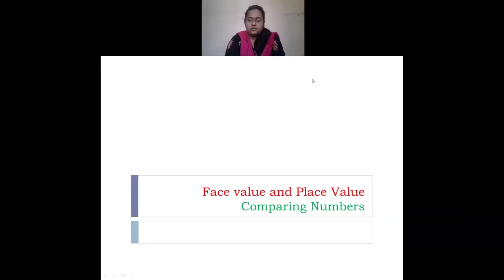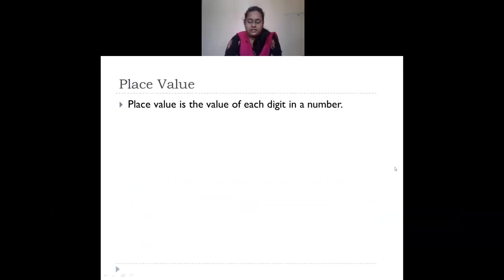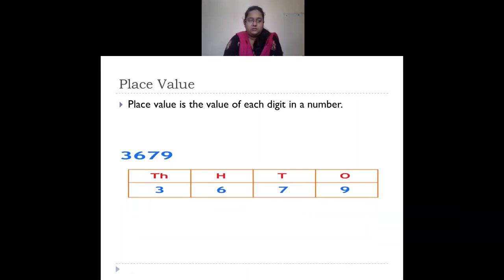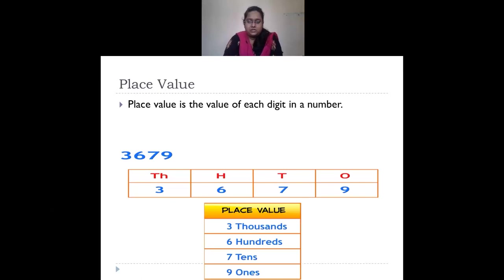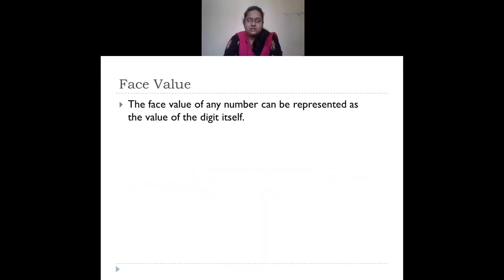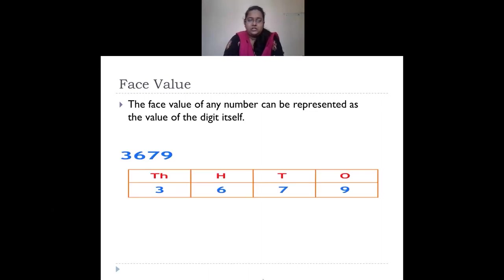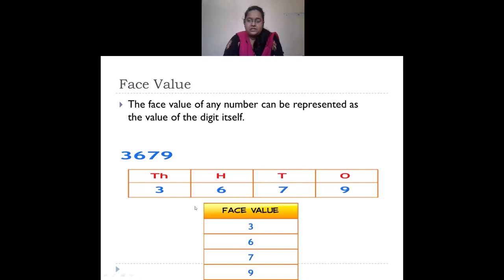We saw what was face value, place value and comparing of numbers. Place value is the value of each digit in a number. So the value of 3 will be 3000 because it's in the thousands place, 6 will be 600 because it's in the hundreds place, 7 is 70, and 9 is 9 because it's in the ones place. Face value is the value of the digit itself. So 3's face value is 3, 6's is 6, 7's is 7, and 9's is 9.